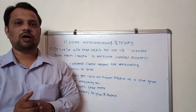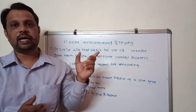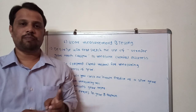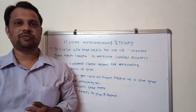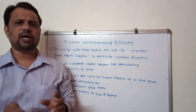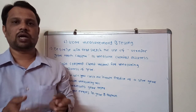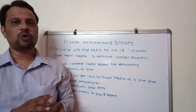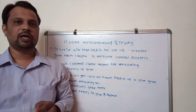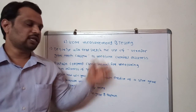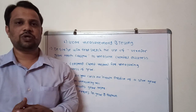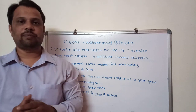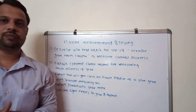After that, list 8 errors in gears and explain them. I have already explained the 8 errors in a previous video — axial runout, runout, backlash — all these things you have to explain. These are some important questions from the gear measurement and testing chapter. Thank you.